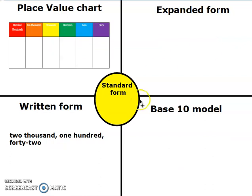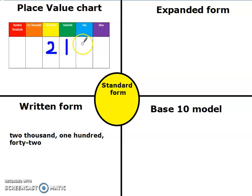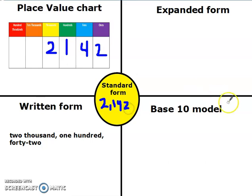Let's look at another one. This time there isn't a base 10 model — this time there's a written form: 2,142. So I'm going to write that in my place value chart. I need a 2 for the thousands place, 2,000. I need a 1 for the hundreds place. I need a 4 because 40 is 4 tens, and 2 for my two ones. So now I can write my standard form: 2,142. I know I have 2,000 plus 100 plus 40 plus 2.